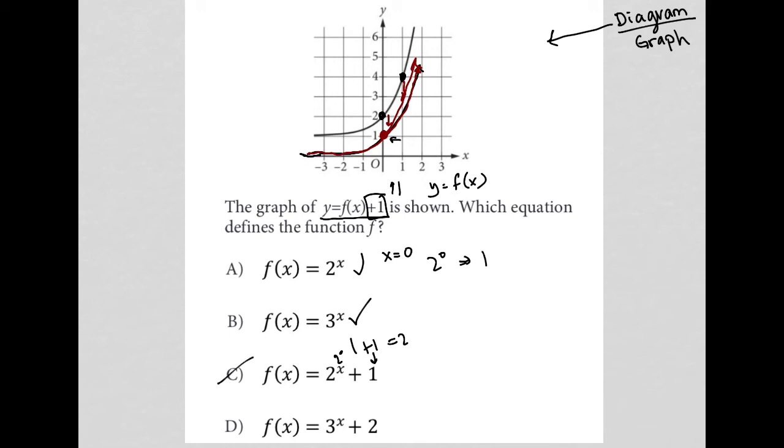And the same thing for choice D. This would give me 1 plus 2, which is 3, when x is equal to 0. So, choice D is gone.